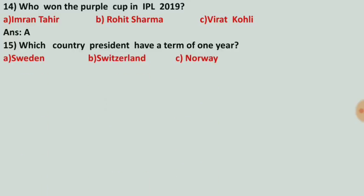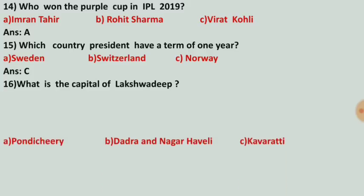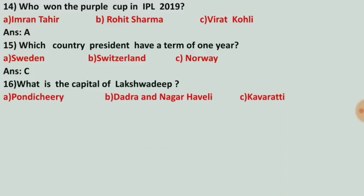Which country's president has a term of one year? Options are Sweden, Switzerland, and Norway. The correct answer is number B, Switzerland — by mistake option C appeared, but number B, Switzerland, is the correct answer. What is the capital of Lakshadweep? Options are Pondicherry, Dadra & Nagar Haveli, and Kavaratti. The correct answer is number C, Kavaratti.